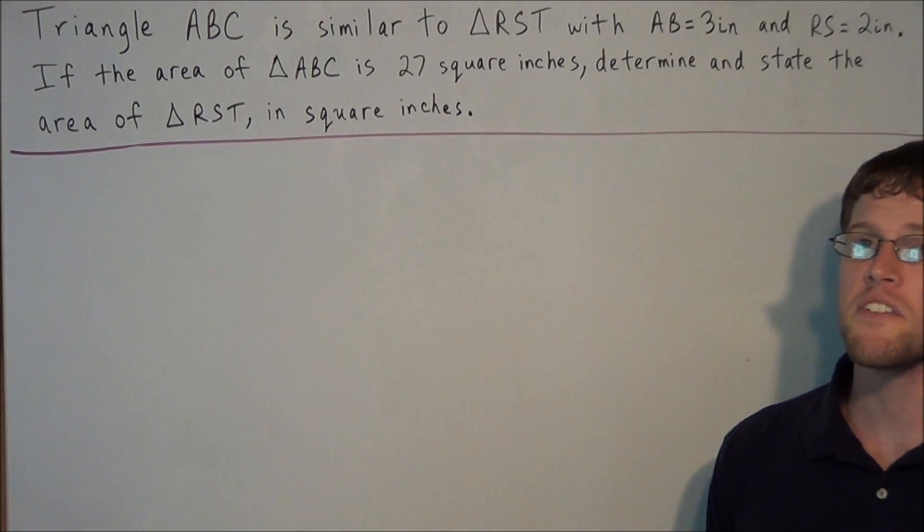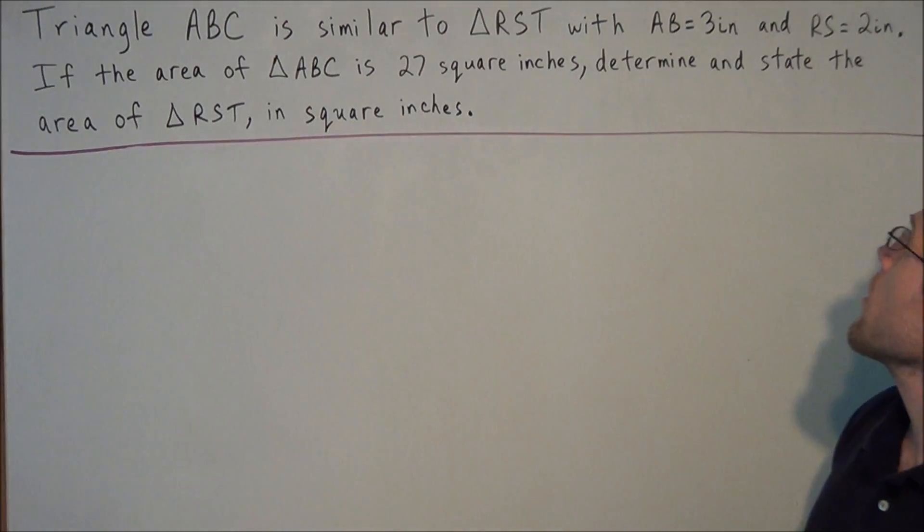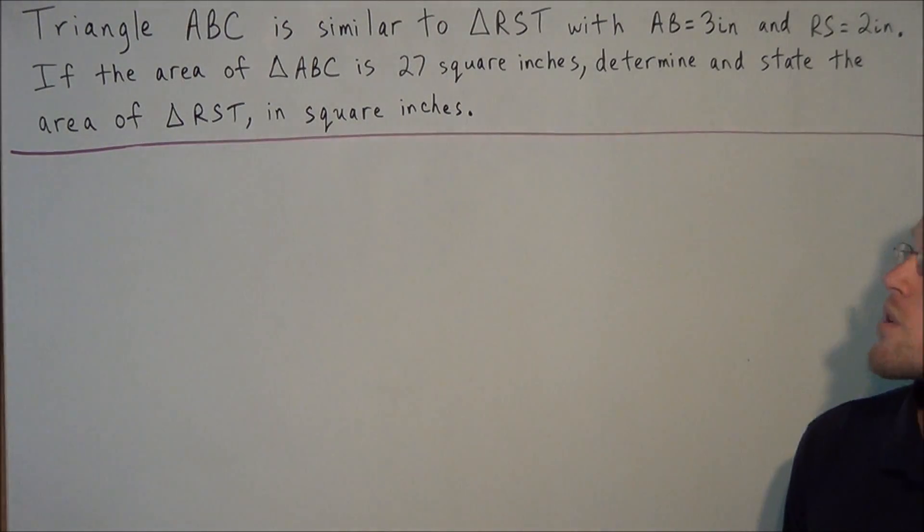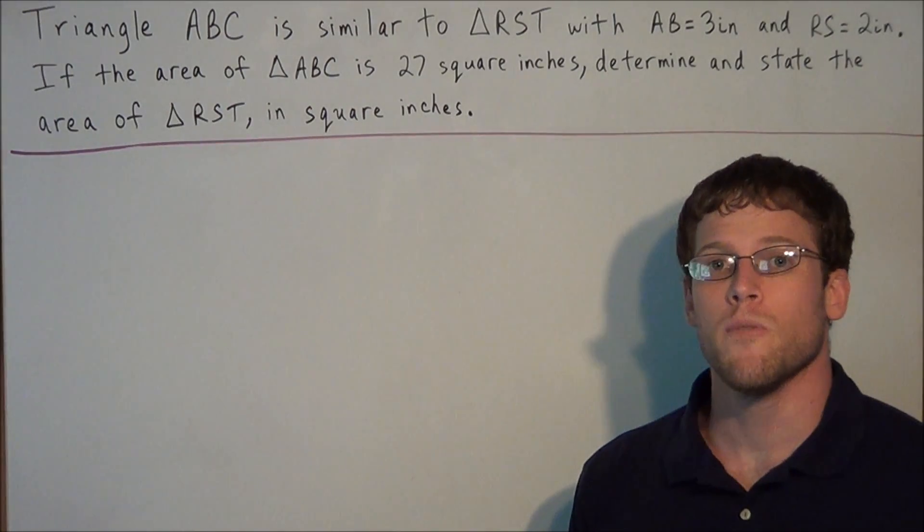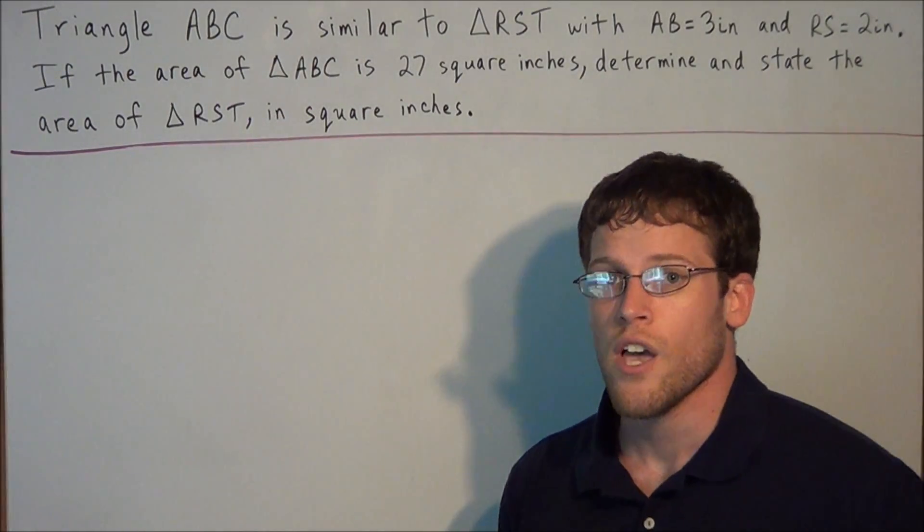We have triangle ABC is similar to triangle RST with AB equal to 3 inches and RS equal to 2 inches. If the area of triangle ABC is 27 square inches, determine and state the area of triangle RST in square inches.